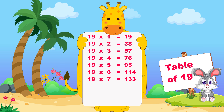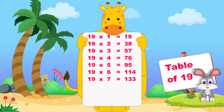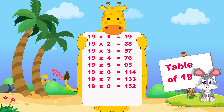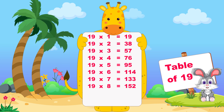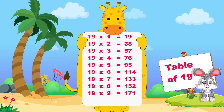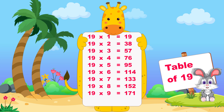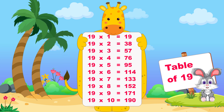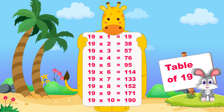Nineteen sevens are one hundred thirty-three, nineteen eights are one hundred fifty-two, nineteen nines are one hundred seventy-one, nineteen tens are one hundred ninety.